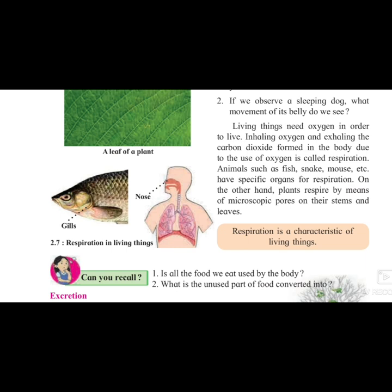Is all the food we eat used by our body? Whatever things you are eating, is all of that being used by your body? No. The part which is essential — the nutrients or the part which is good for our body — is converted and used, and the part which is not good for our body is thrown outside. The unused part of the food is converted into excreta. Excreta is the waste which we throw out of our body daily. There is no use of that particular food.